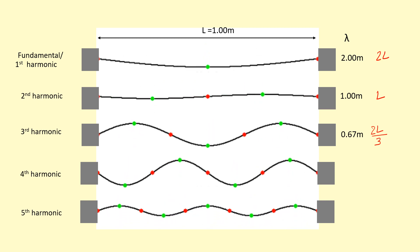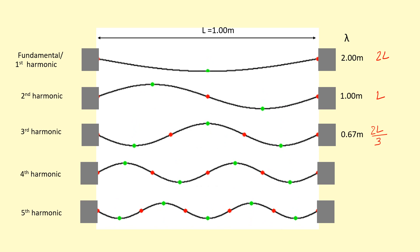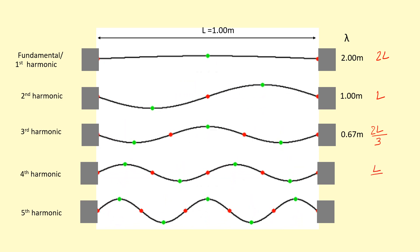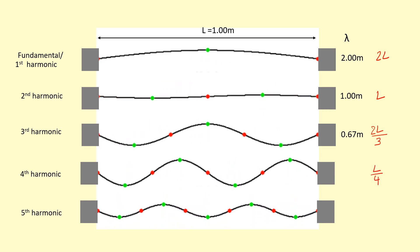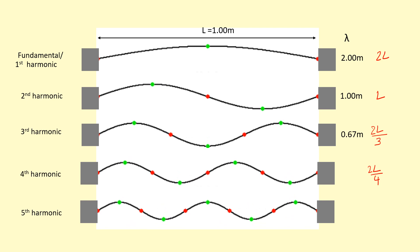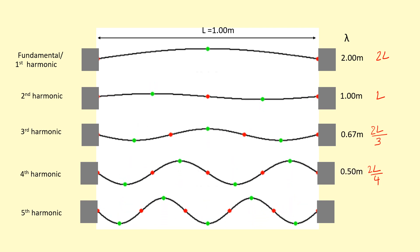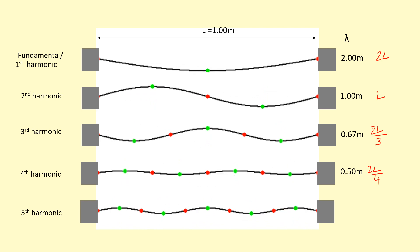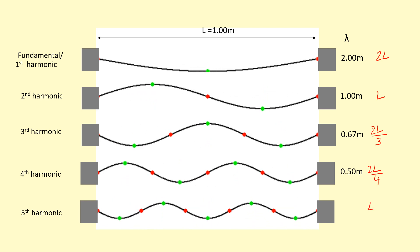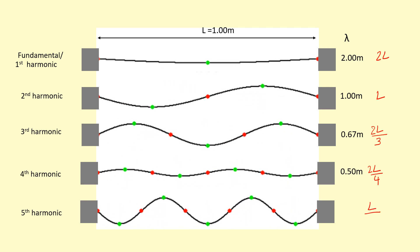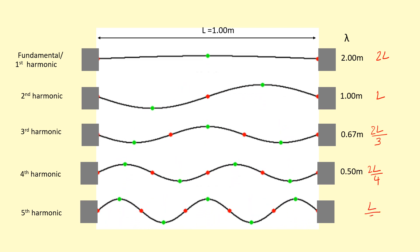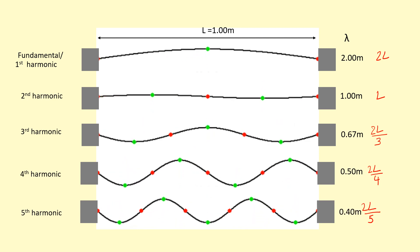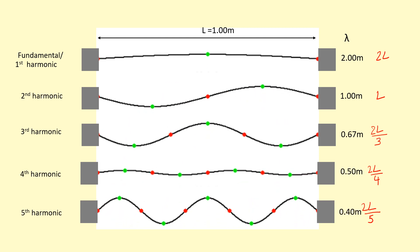For the fourth harmonic, you can see four loops in total. So take the length L divided by four times two. It's just going to be half the length, so 0.50 meters. Finally, take the length L — you can see five loops in the fifth harmonic, but we only need two for a whole wavelength. So that gives us 0.40 meters.